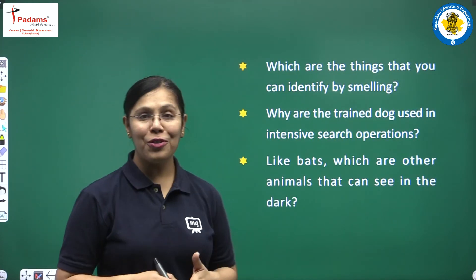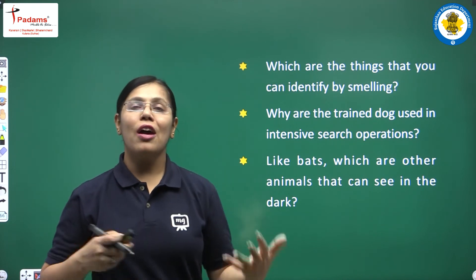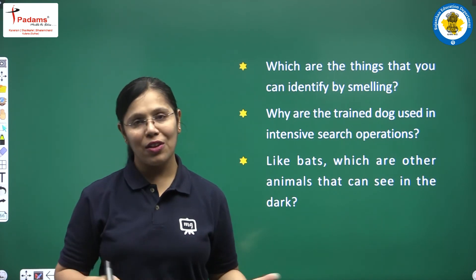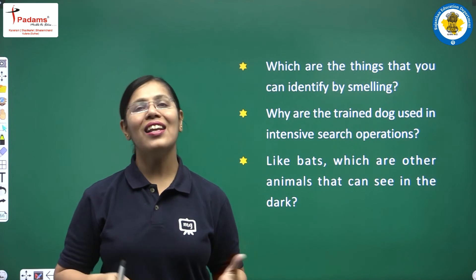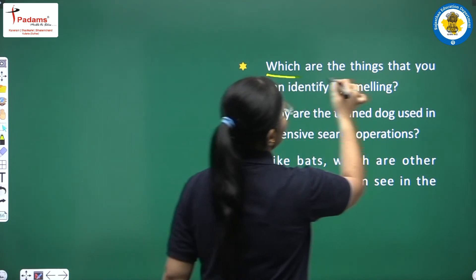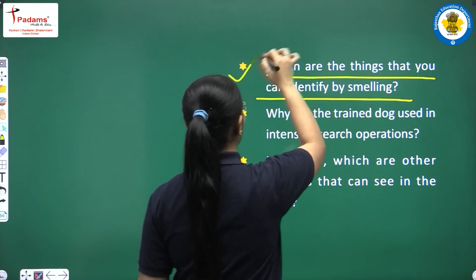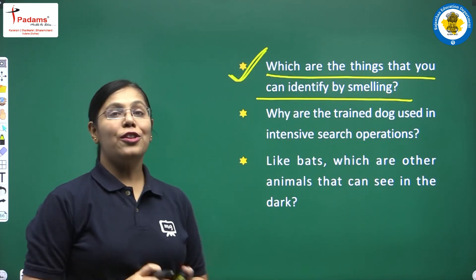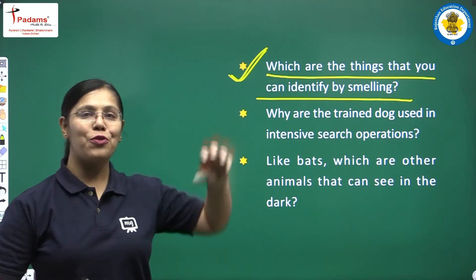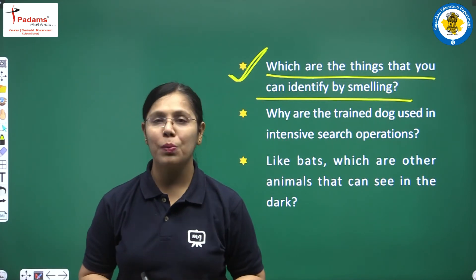Now there are a few questions. You just have to think about them and discuss them with your friends, classmates, teachers and other elders. The first question is: which are the things that you can identify by smelling? We have seen that dogs have a very strong sense of smell — so what are the things which you can identify through smell?